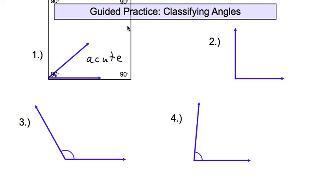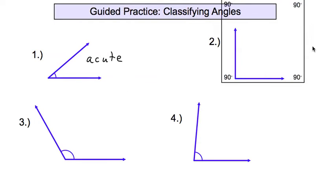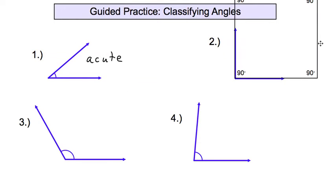Let's take a look at number two with our paper again. I put the corner right in the vertex, and it looks like it's forming an exactly 90-degree angle, so we have a right angle.